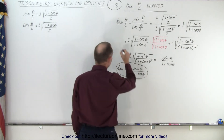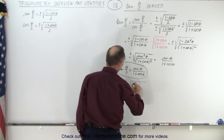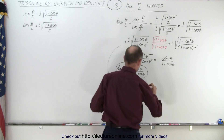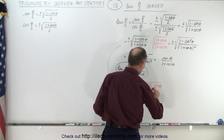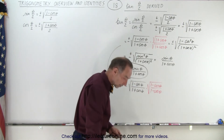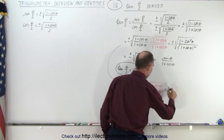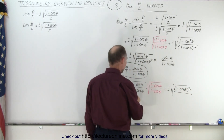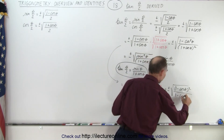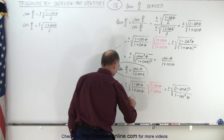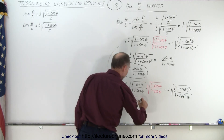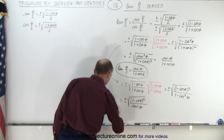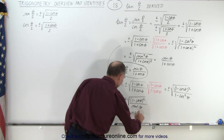On the other hand, if you use the other method — starting from plus or minus the square root of (1 minus cosθ)/(1 plus cosθ) and multiplying by the square root of (1 minus cosθ)/(1 minus cosθ) — then in the numerator you get (1 minus cosθ) squared, and in the denominator you have two binomials with a sign difference giving 1 minus cos²θ, which equals sin²θ. So this can be written as plus or minus the square root of (1 minus cosθ)² divided by sin²θ, which means tan(θ/2) equals (1 minus cosθ) divided by sinθ.